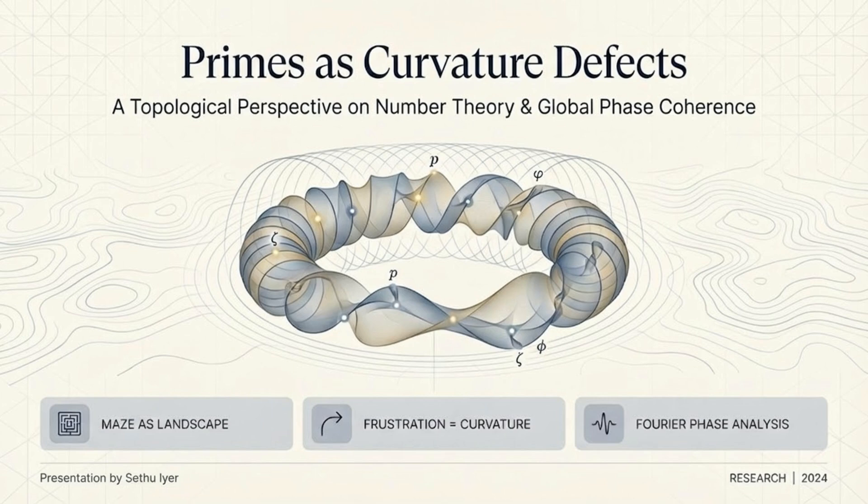Welcome to this video on primes as curvature defects, exploring a topological perspective on number theory and global phase coherence. We will examine primes through the lens of a maze as a landscape, where frustration equals curvature, and by using Fourier phase analysis.